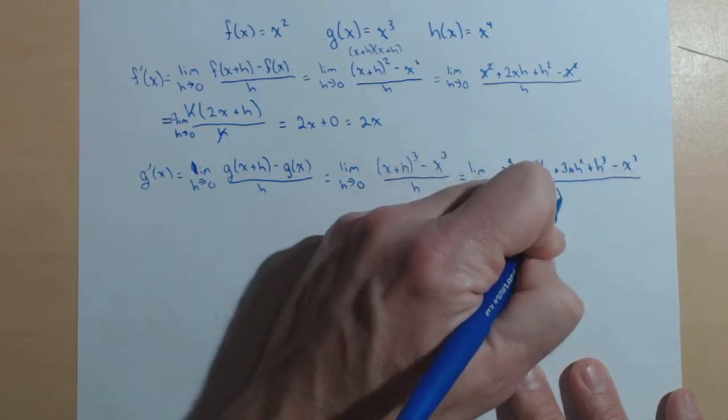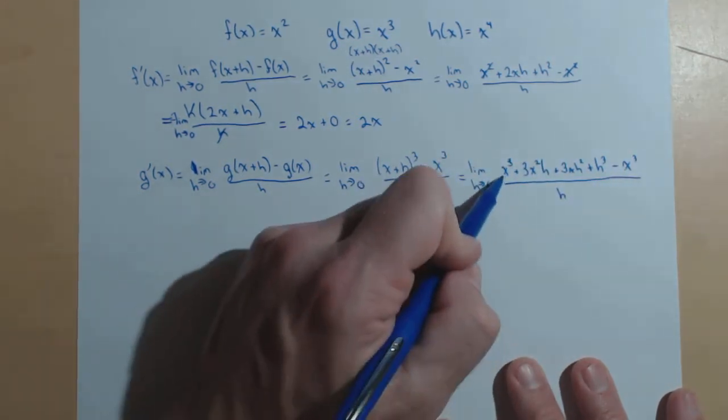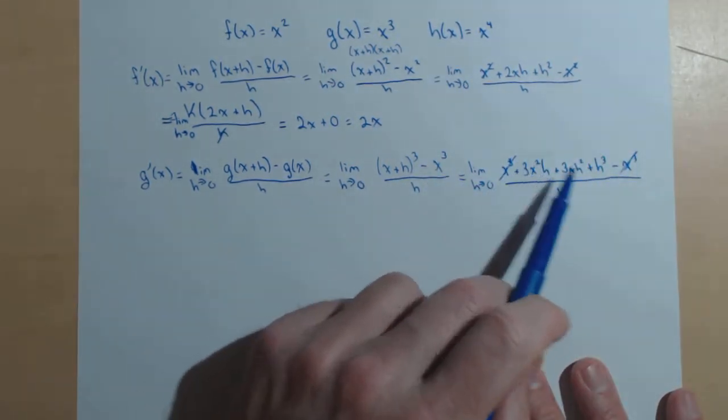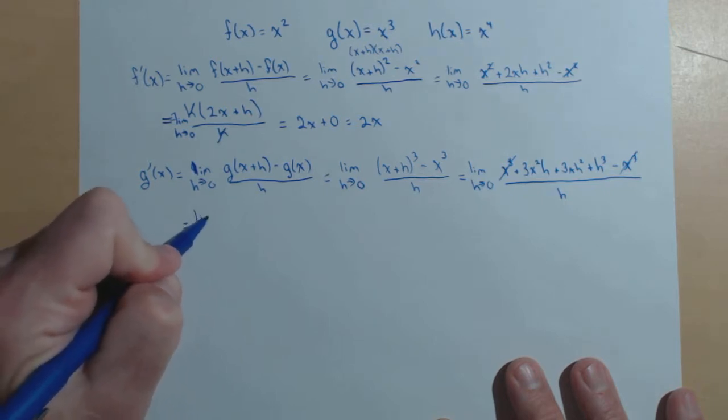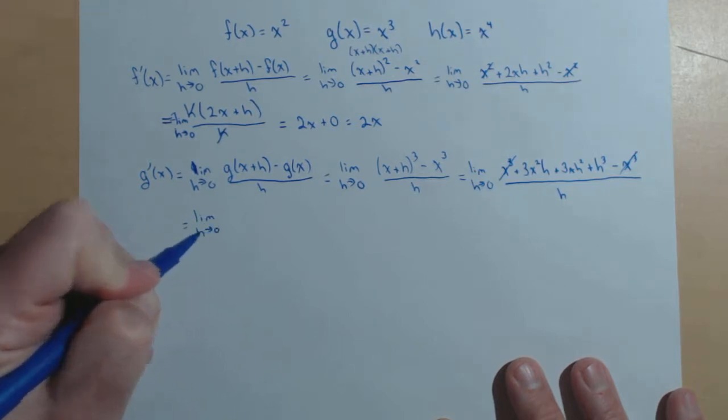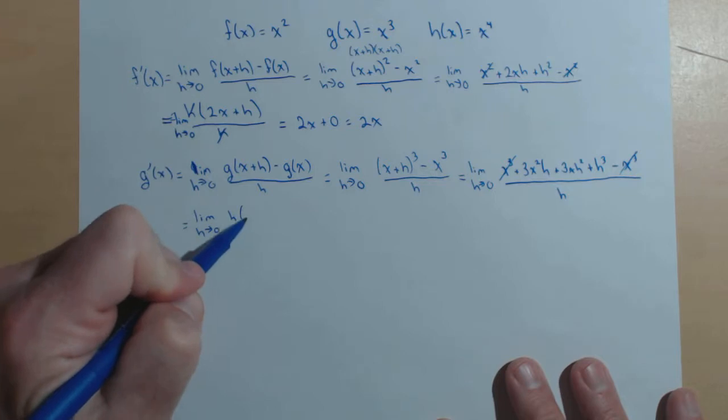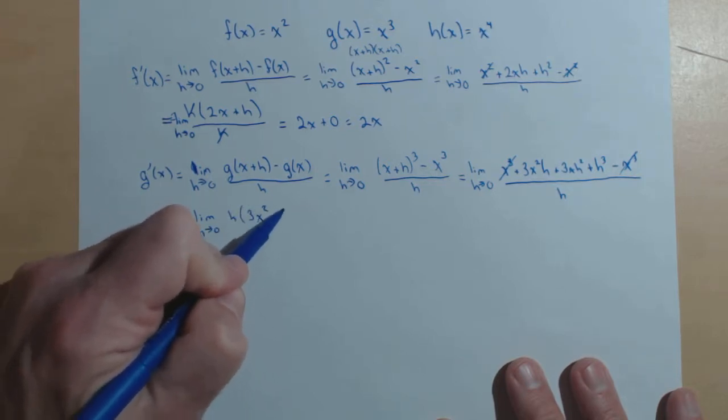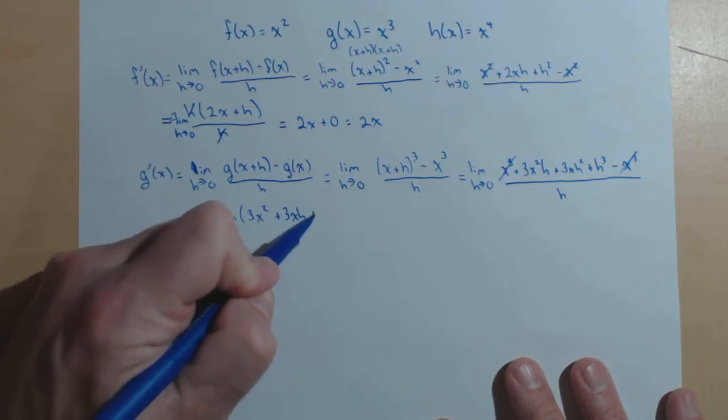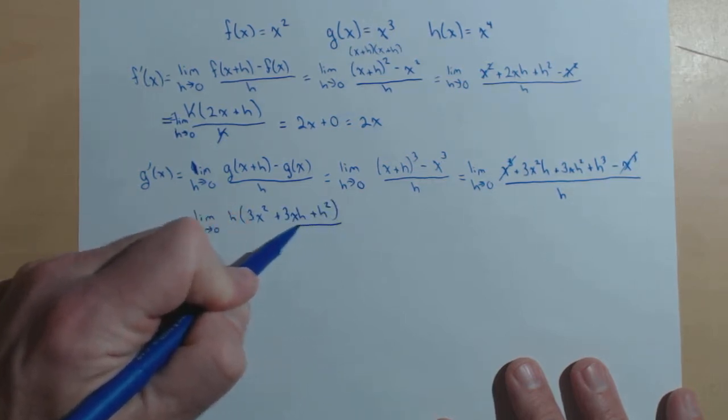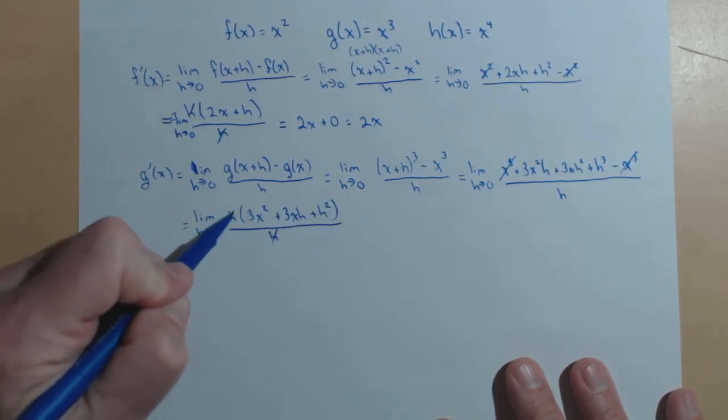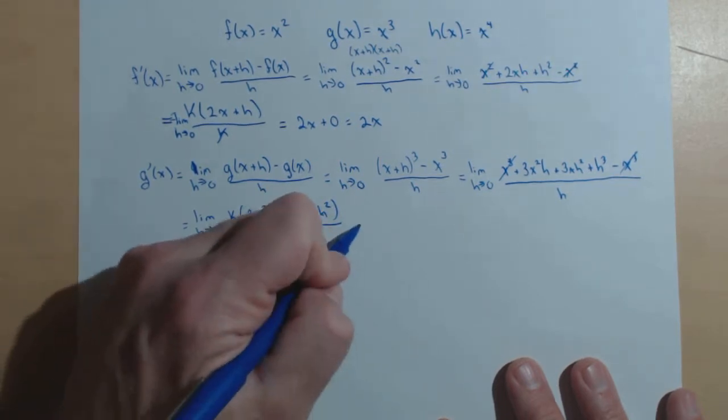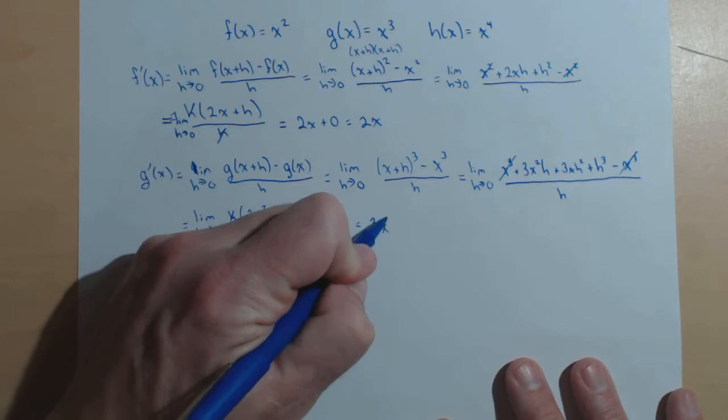You're going to notice a lot of patterns in what we're doing. Notice the positive x cubed and the negative x cubed are going to cancel. Now again, I can factor an h out of the terms in the numerator. So, h times 3x squared plus 3xh plus h squared all over h. Those h's cancel. Now, I can plug in zero for h. That eliminates these two terms and gives me 3x squared.